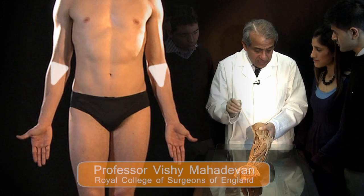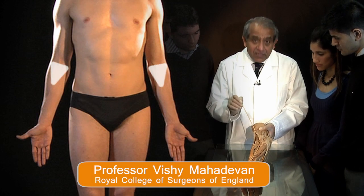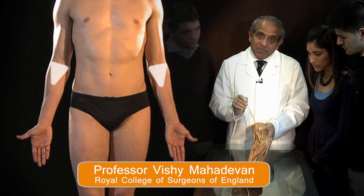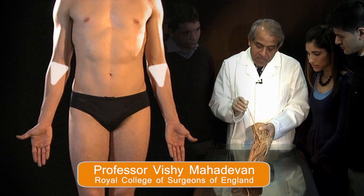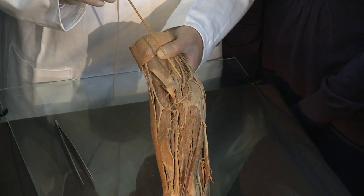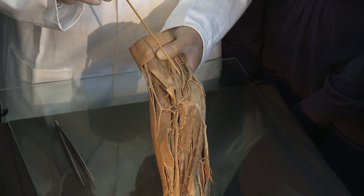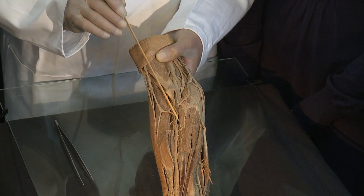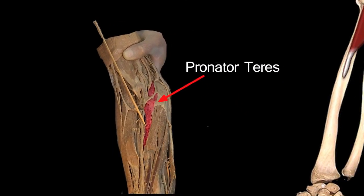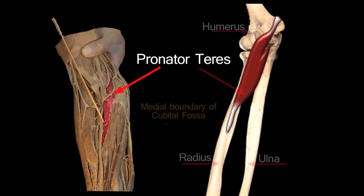Let's begin by defining the boundaries of the cubital fossa. The medial boundary of the cubital fossa is our old friend pronator teres, the most lateral of the common flexor muscles.